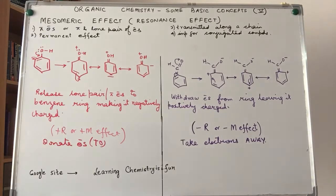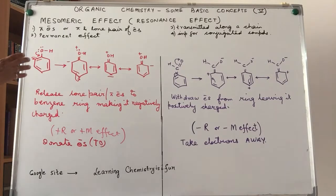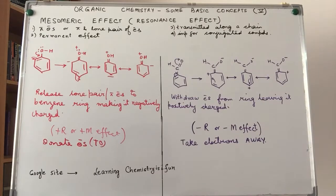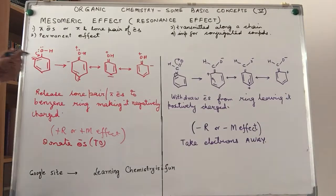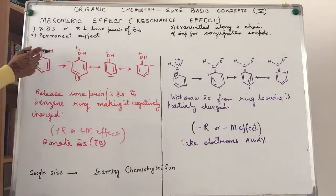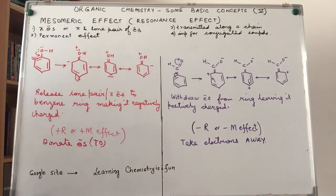Let's understand how it takes place. The canonical structures we draw can be very confusing for a first-time student, so I'll give you tricks to draw them. First, let's take the example of phenol — C6H5OH — where oxygen has a lone pair of electrons on it.